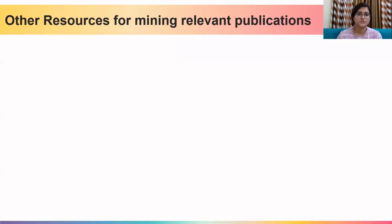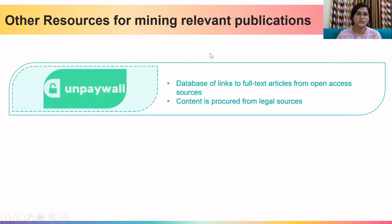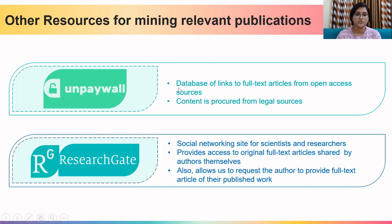There are a few resources which could be very useful while mining relevant publications. One of them is Unpaywall. Many times when we browse through publications they are not freely available — in such cases, full-text articles can be accessed through Unpaywall, which can be added as a Chrome extension and is fully legal. Another useful site is ResearchGate, a social networking site for scientists and researchers that allows us to request the author to provide the full-text article of their published work.